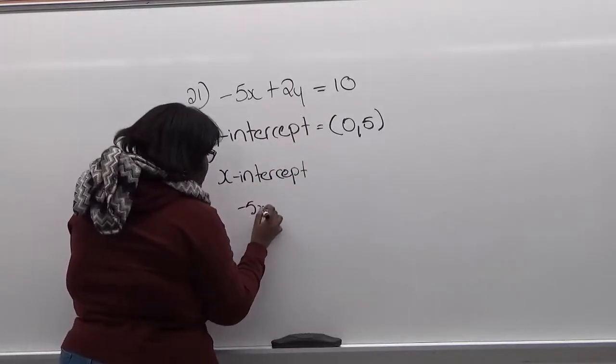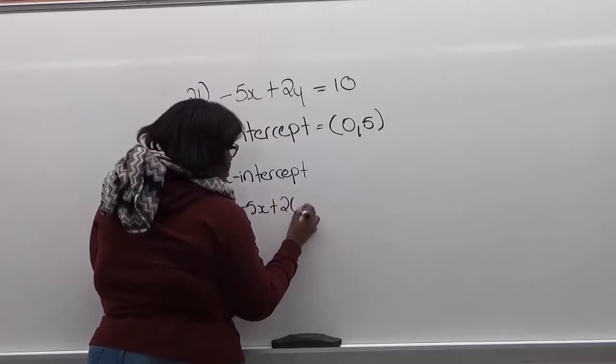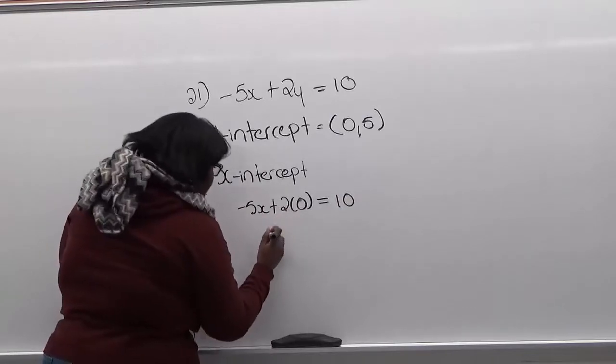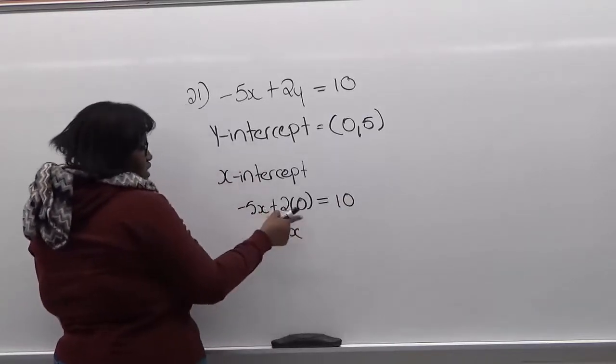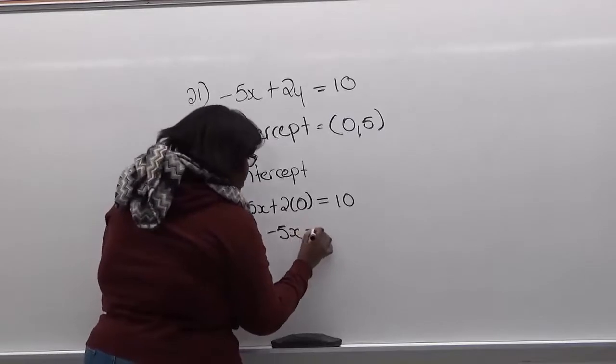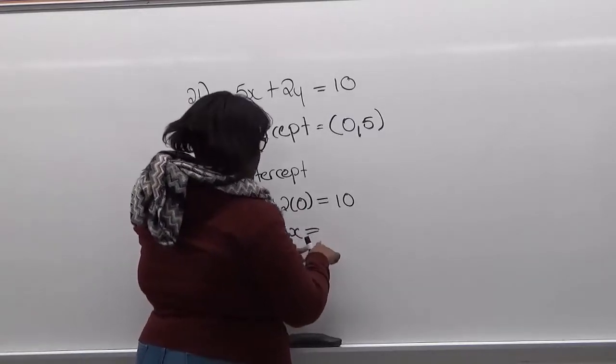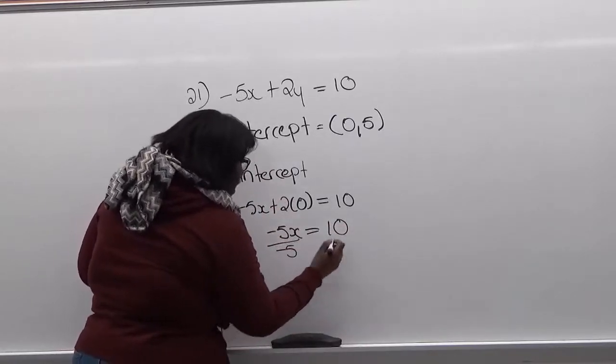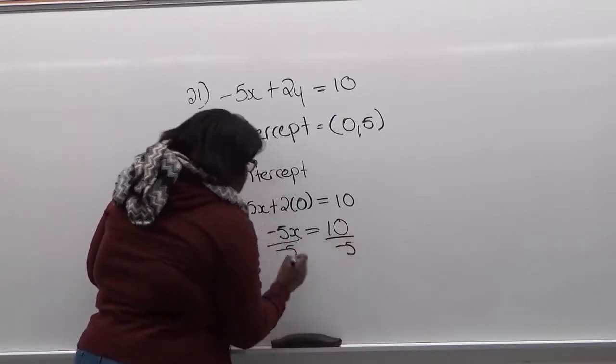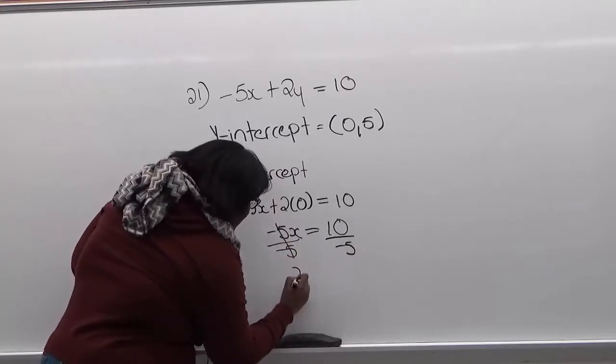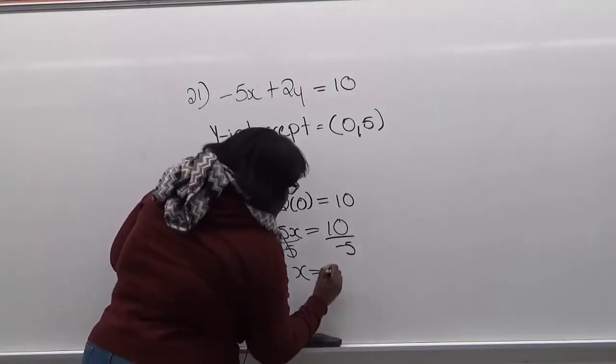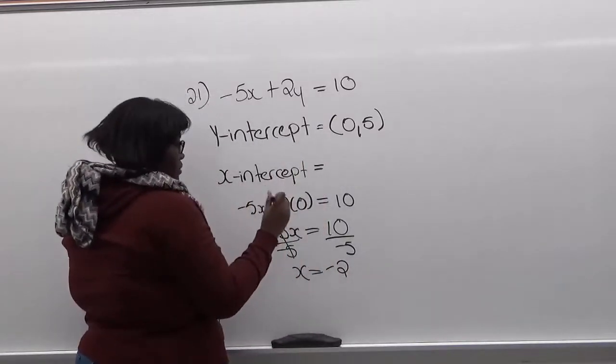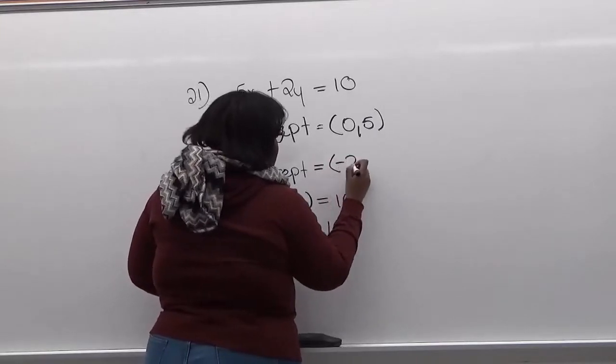So we're going to have negative 5x plus 2 times 0 equals 10. So now we're going to rewrite this as negative 5x. 0 times the number is 0, so we're not going to have anything else there. We're going to have it equal to 10. So then we're going to divide by negative 5 on both sides. This is going to get cancelled out. So we're going to be left with x equal to negative 2. So our x-intercept is (negative 2, 0).